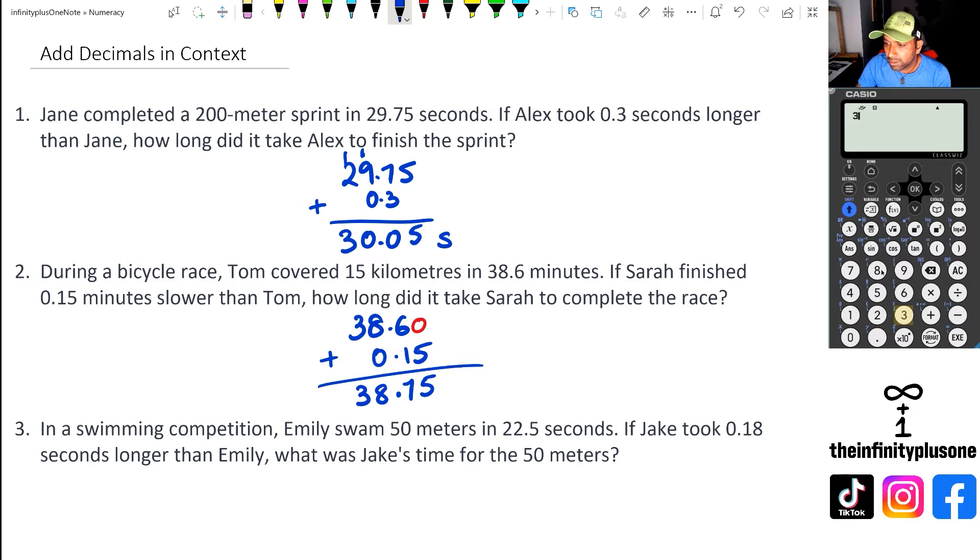Again, checking it out on the calculator, so we've got 38.6 plus 0.15. I can just put 0.15 in the calculator and that's going to give me 38.75.